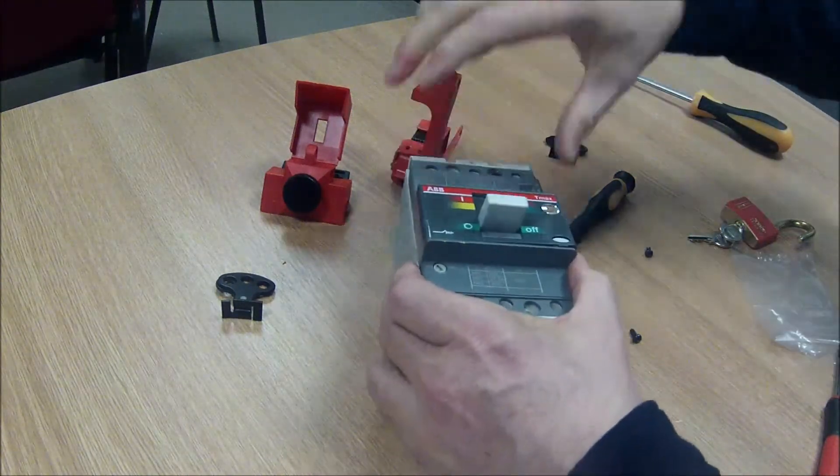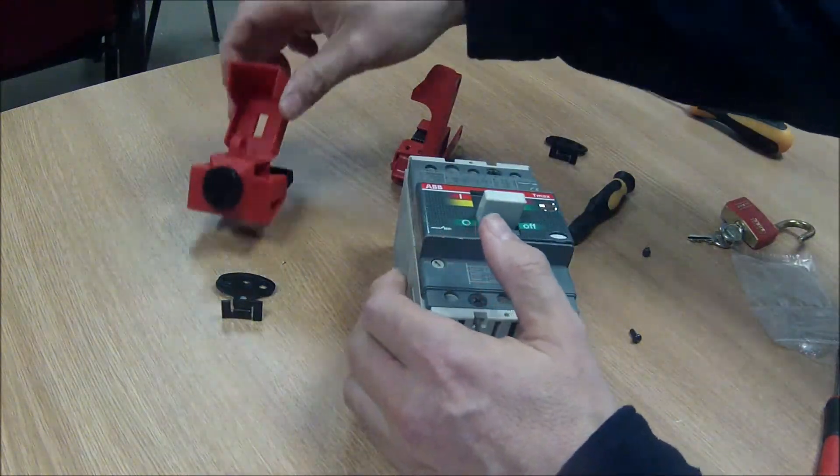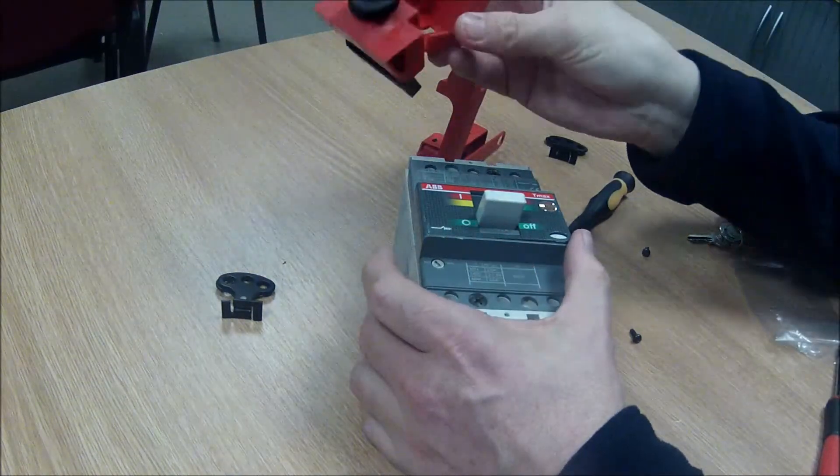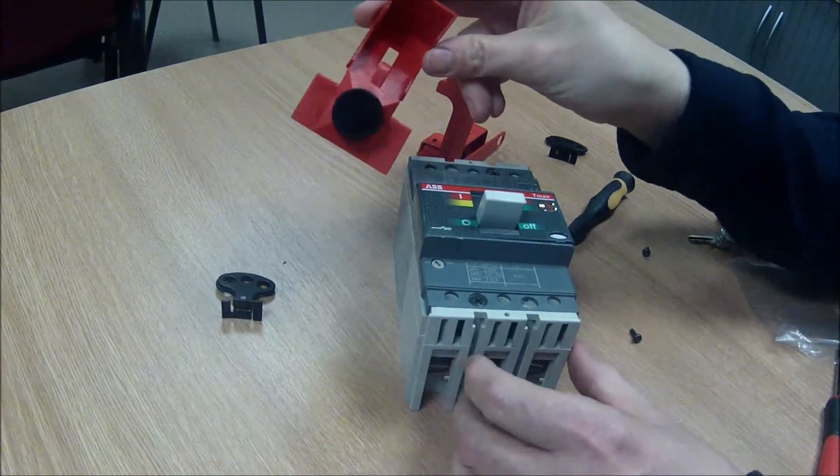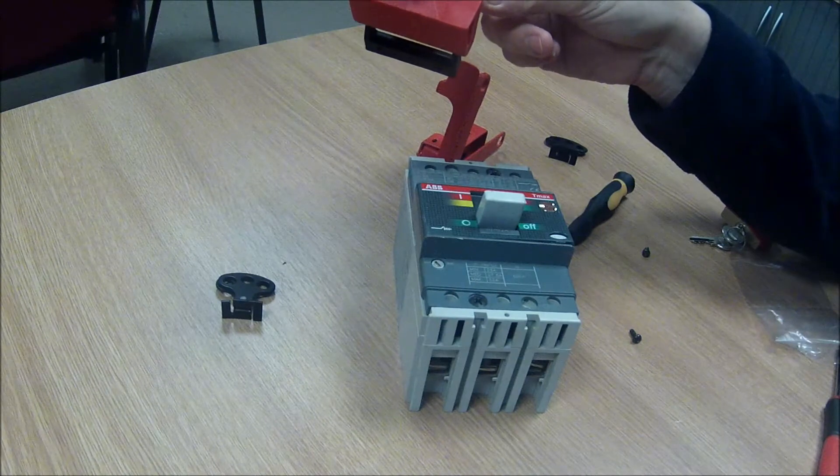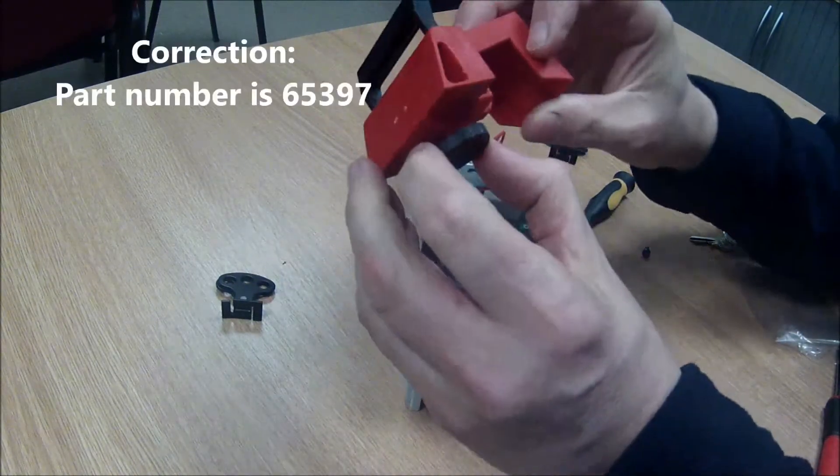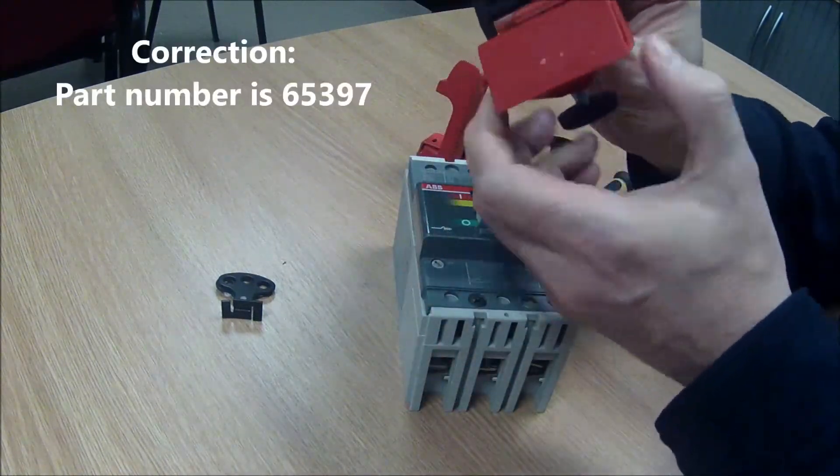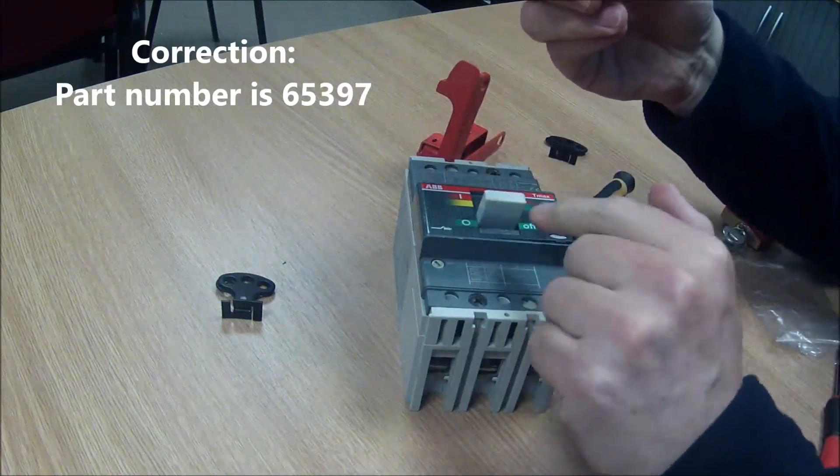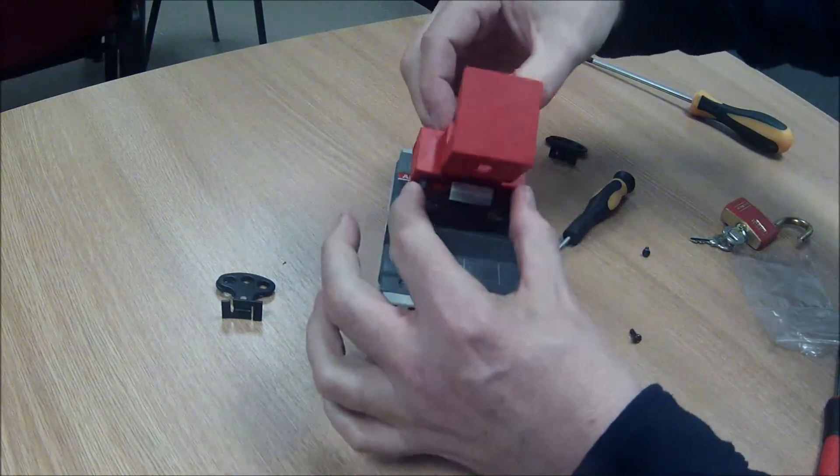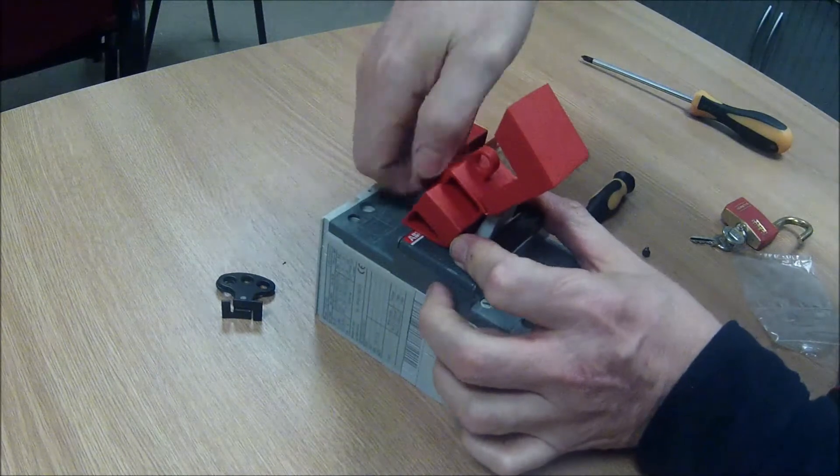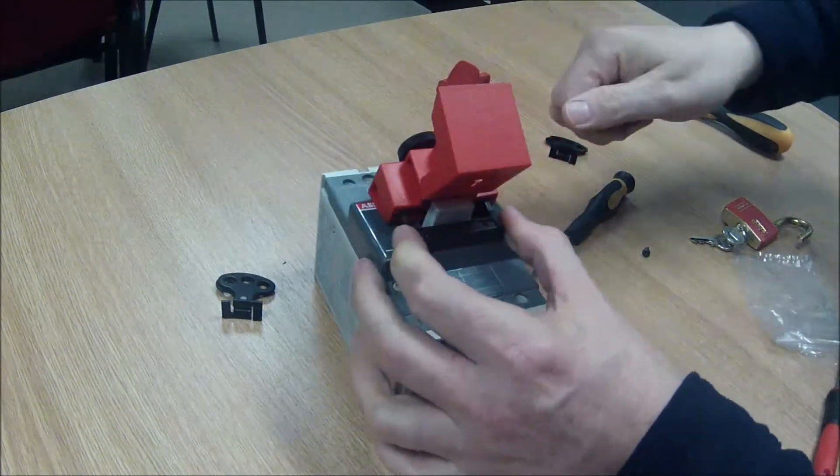We've got two other lockout devices here. One from Brady, one from Master Lock. This is referred to as a clamp on circuit breaker lockout. Part number of this one is 65396. It's got a thumb screw mechanism here. And an opening here through which the toggle of the switch goes. Offer it off onto the toggle like that. Tighten up the thumb screw until it grips. It's now gripping.